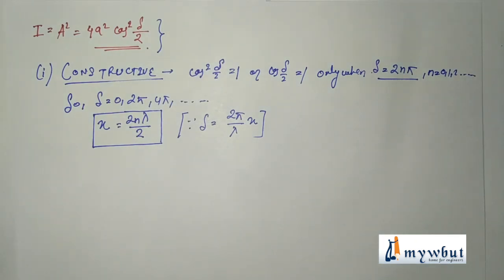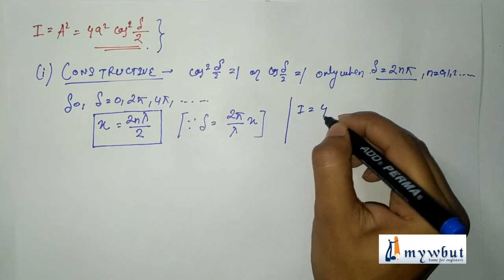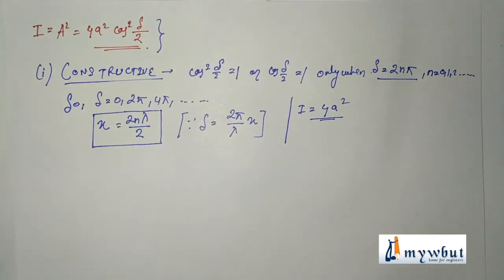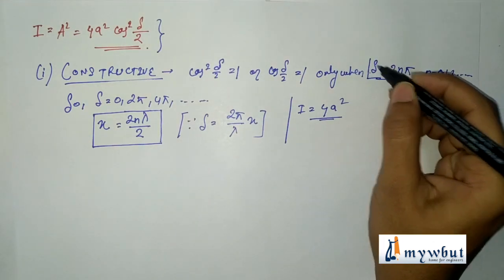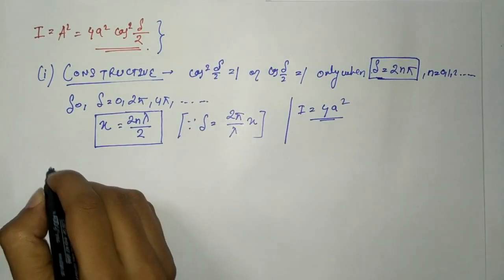Hence for constructive interference, I = 4a². Therefore, for maximum intensity, the phase difference is an even integral multiple of π, or equivalently the path difference is an even integral multiple of λ/2. Remember these two formulas for constructive interference.